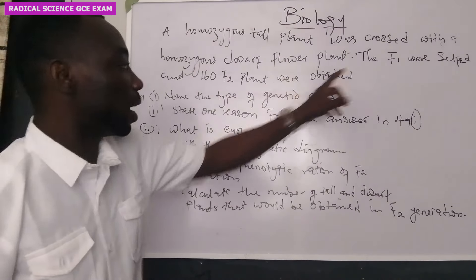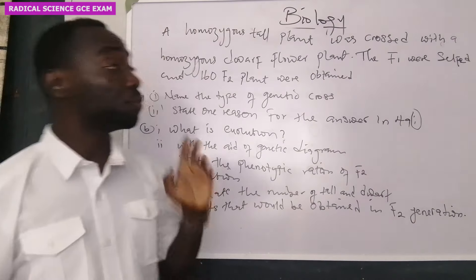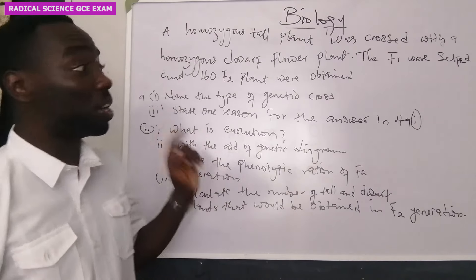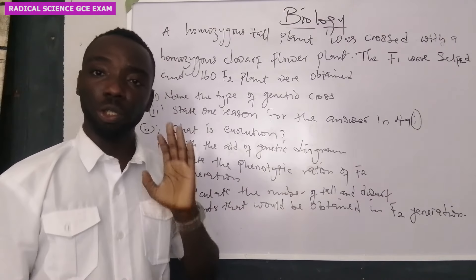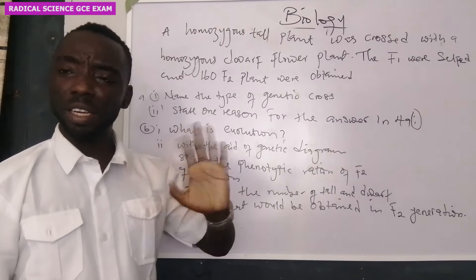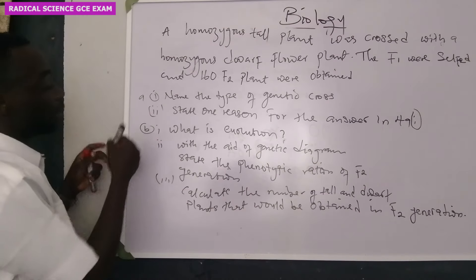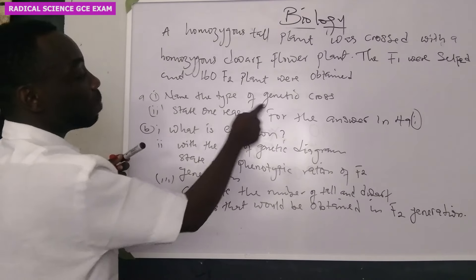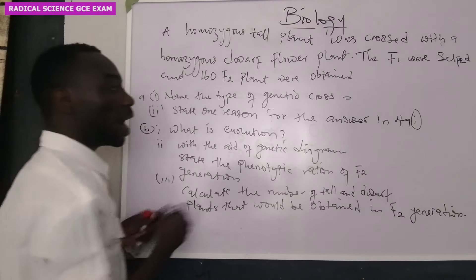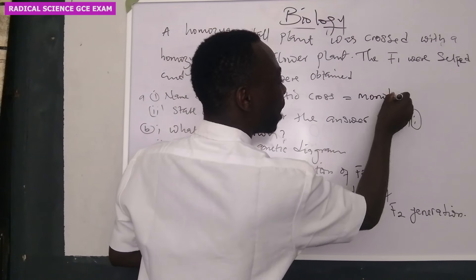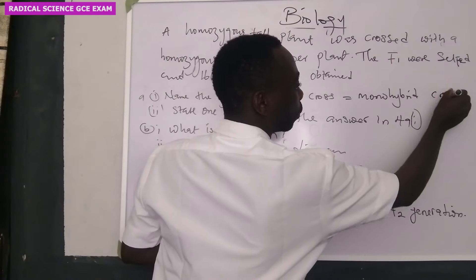Before we can answer these questions, you must know how to cross. That is the first thing, because if you learn how to cross effectively, it will be easy for you to answer these questions. I will teach you how to cross so you find it very easy in your exam. Now let's begin with the first question. They said: name the type of genetic cross. This type of genetic cross is known as monohybrid cross.